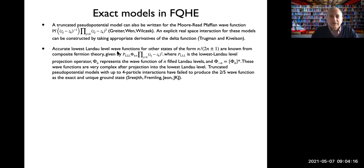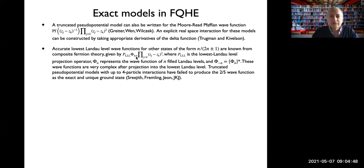Accurate wavefunctions also exist for fractions of the form n over 2n plus or minus 1. Here, P_LLL is the lowest Landau level projection operator, Phi_N is the wavefunction of N filled Landau levels, and there is the usual Jastrow factor. Once projected into the lowest Landau level, these wavefunctions are extremely complicated and don't have the simple form of Laughlin's wavefunction. Nonetheless, they are extremely accurate, and one could ask whether they can be obtained as exact solutions of some parent Hamiltonian.